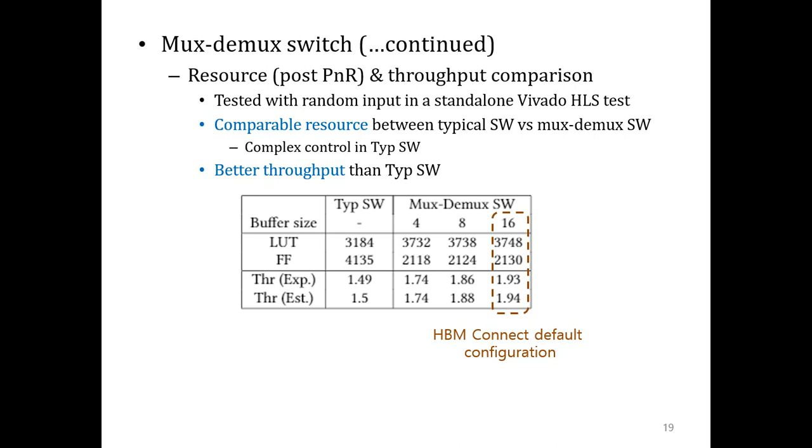This is the resource and the throughput comparison result. To our surprise, the LUT and flip-flop consumption of a typical switch and MUX-DEMUX switch is pretty similar. In a typical switch, we have to compare two inputs for destination port conflict on every cycle, and this requires a very complex control circuit in HLS. A MUX-DEMUX switch decomposes this into four simpler operations. So overall, resource consumption is still comparable. In terms of throughput, a MUX-DEMUX switch clearly outperforms a typical switch as expected.